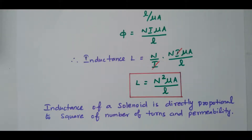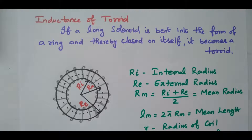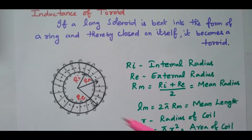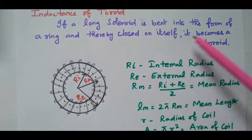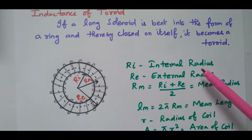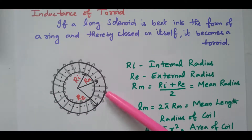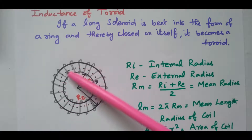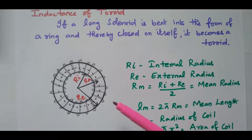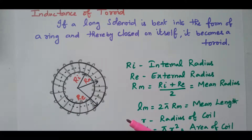Now we will go to the toroid and see the derivation of inductance of a toroid. If a long solenoid is bent in the form of a ring and thereby closes itself, it becomes a toroid. The solenoid is lengthy; if the two ends are joined together to form a circle or ring, then it is called a toroid.